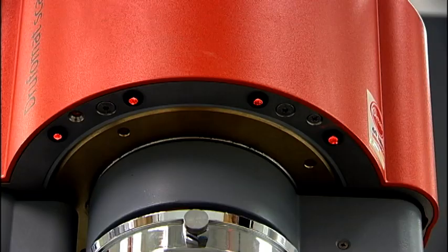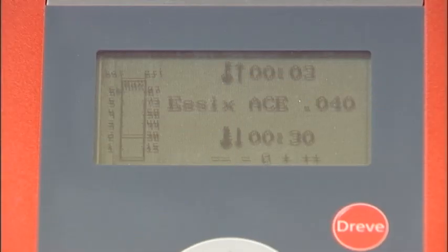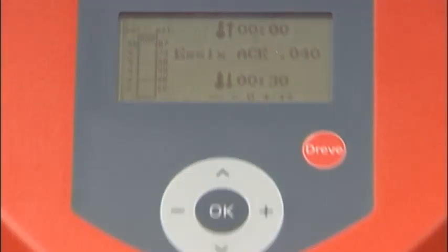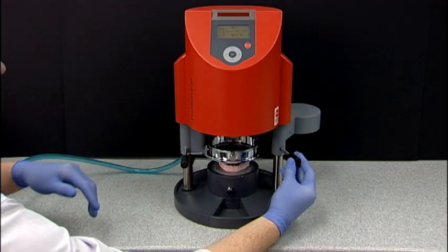The heat indicator lights will shine red at the base of the Drufomat scan indicating the heating process has started. Once the heat time has expired, you will hear a long beep. Pull the lever on the right side, moving the heating element away from the base of the Drufomat.